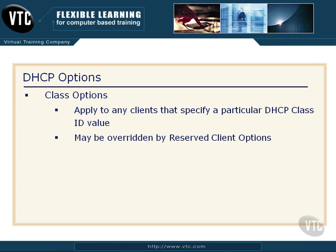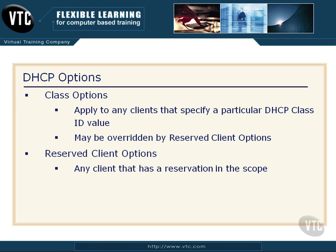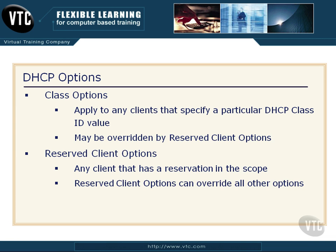A class option can be overridden by reserved client options, and reserved client options are applied to any client that has a reservation in the scope. We talked about reservations in a video entitled 'DHCP Reservations,' so if you haven't seen that, you may want to take a look. Reserved client options can override all other options. So you have an inheritance chain you can use — apply at the global level the options you want everybody to get, and then in the various scopes, classes, and reserved clients, override those as needed. The DHCP options are how we provide extra information to our clients outside of just the IP address.